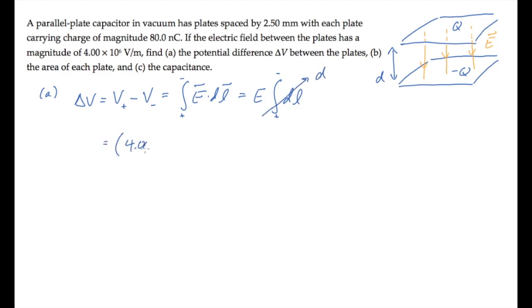So the potential difference is the magnitude of the electric field times the plate separation d. And when you calculate that, you find that it equals 10,000 volts.